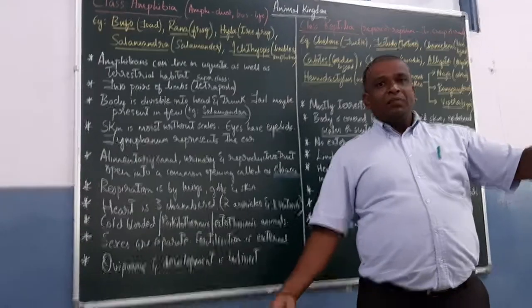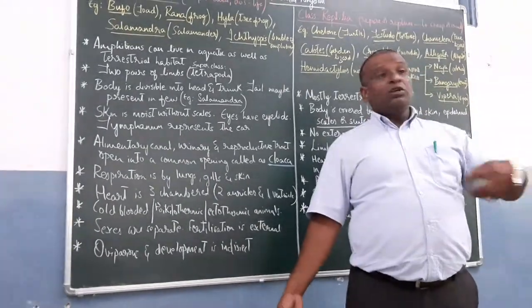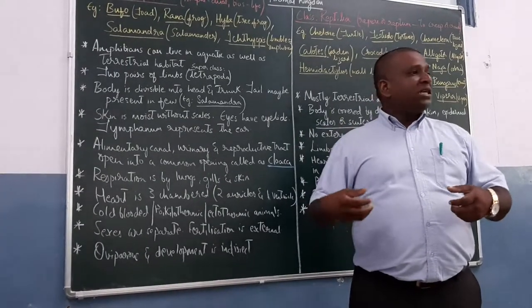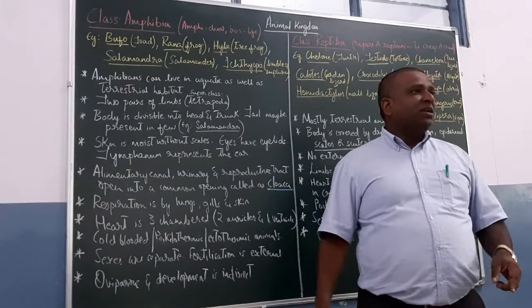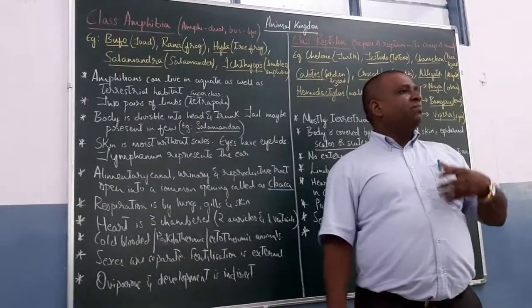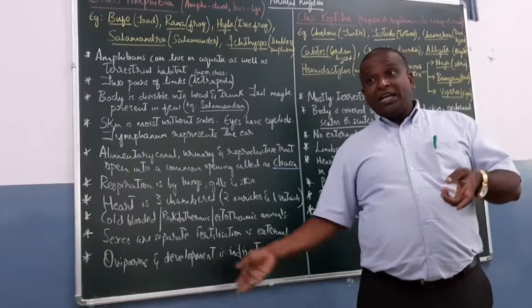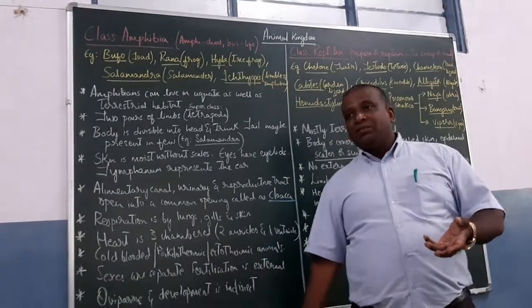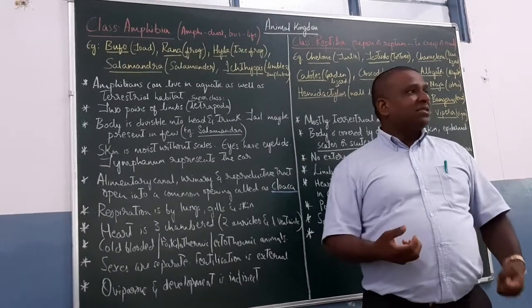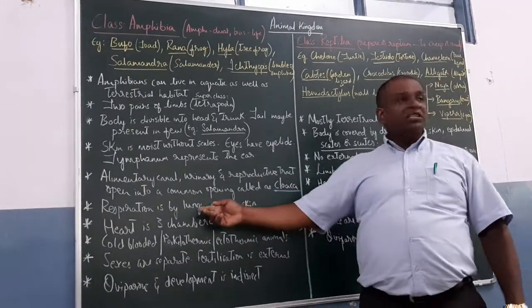But if you remove frog out of water, they won't die. Because they will be having lungs. And they also have external moist skin, which helps them in respiration. Cutaneous respiration. Buccopharyngeal respiration. In case of young ones, gills. And in case of the developed ones, they have lungs. So all these types of respiration is noticed there.